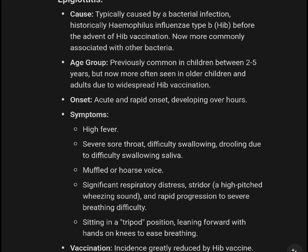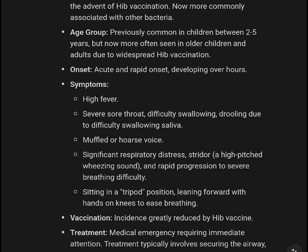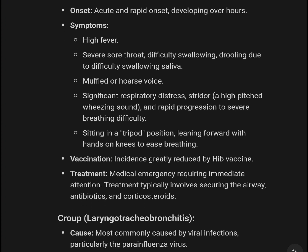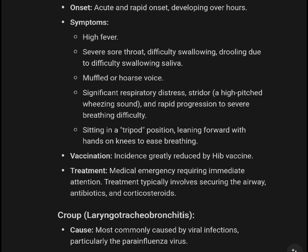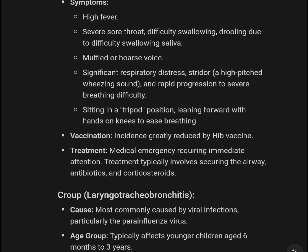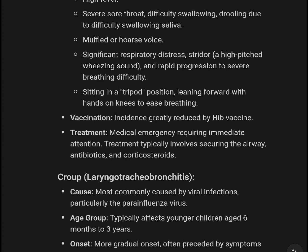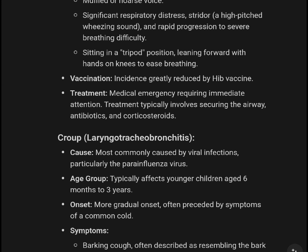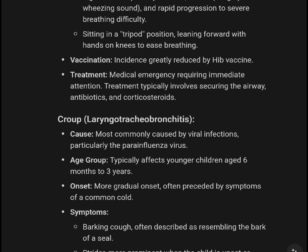Epiglottitis is typically caused by bacterial infection — historically Haemophilus influenzae type B before the advent of Hib vaccination. Now more commonly associated with other bacteria. Previously common in children ages 2 to 5 years, but now more often seen in older children and adults due to widespread Hib vaccination. Onset is sudden and rapid, developing over hours. Symptoms: high fever, severe sore throat, difficulty swallowing including trouble with saliva, muffled or hoarse voice, significant respiratory distress, stridor or high-pitched wheezing, and rapid progression to severe breathing difficulty. Child sits in tripod position, leaning forward with hands on knees. Treatment: medical emergency requiring immediate airway management, antibiotics, and corticosteroids.